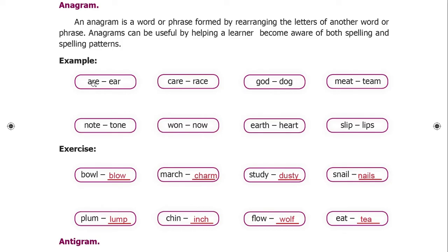For example, the letters A, R, and E can form: are, ear, era. This is an anagram. Another example: care and race are anagrams of each other.